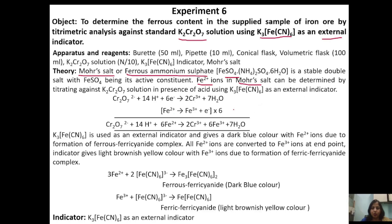Potassium dichromate is an oxidizing agent. When we add potassium dichromate into Mohr salt solution in the presence of an acidic medium, it oxidizes ferrous ions into ferric ions. When we check a drop containing ferrous ions on the indicator drop, ferrous ferricyanide is formed, which is dark blue in color. When all ferrous ions are converted to ferric ions, the drop reacts with ferricyanide and forms ferric ferrous cyanide, which is light brownish yellow in color — this is the end point.